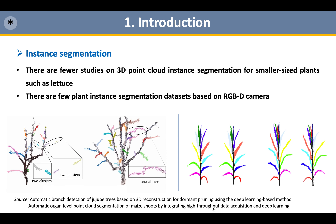Fine-grained segmentation of different parts of a plant is very meaningful for plant phenotype research, but there are fewer studies on 3D instance segmentation for smaller-sized plants such as lettuce, and datasets made by RGB-D cameras are scarce.